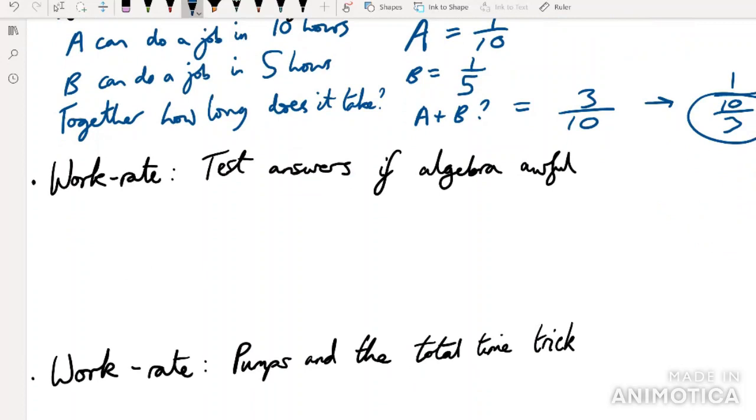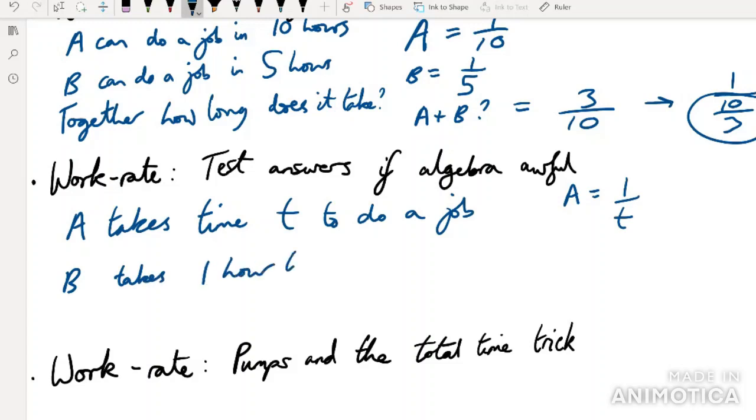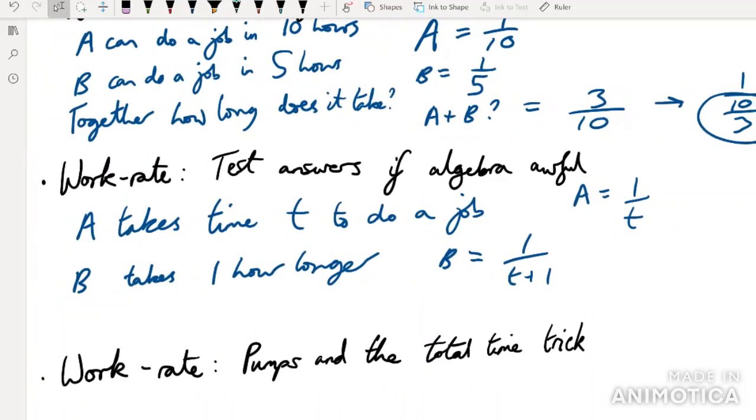Sometimes in work rate problems, once you've fully translated and set up the equations, the algebra can get very bad. So for example, if A takes time T to do a job, so A is 1 over T. B takes 1 hour longer. So B equals 1 over T plus 1. And then it's something to do with them together. Well, together, we're going to have 1 over T plus 1 over T plus 1. And then maybe we want to know how long it takes them to do, how long does it take some new time to do 1. And effectively, what you can see here is the algebra is going to get pretty nasty pretty quickly.